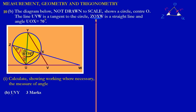They're asking us to find the angle UVY, so let's quickly identify that angle. I'm considering a big triangle here — I'm running my pointer along this big triangle: U, V, Y. Let's mark the angle they're asking us to find. It's the angle at the point V. Remember, the letter in the middle is the point where the angle is being formed, so I'm going to put a question mark there.